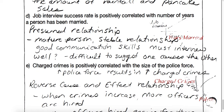Job interview success rate is positively correlated with the number of years a person has been married. So being married for 10 or 15 years is going to cause you to do better in a job interview. We would say that's a presumed relationship — a mature person with stable relationships — but we can't really say that the years someone's been married is going to cause them to do better in a job interview. Some people are not married and can do very well in job interviews.